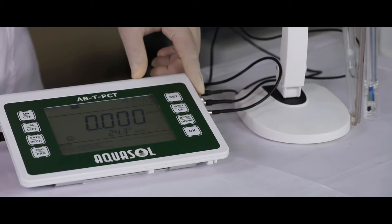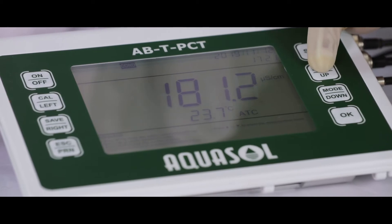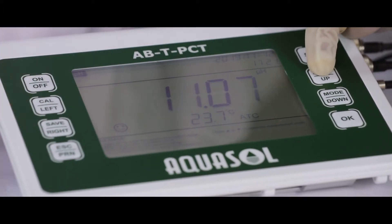Switch on the meter. Using shift key, you can shift between pH, ORP and conductivity.